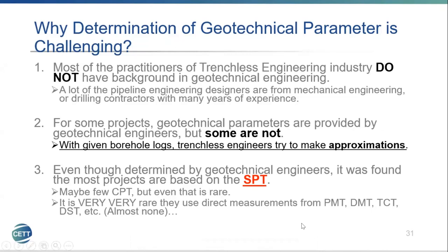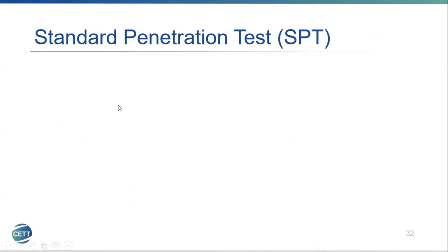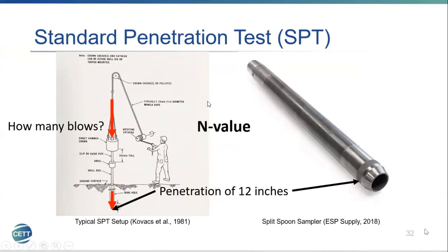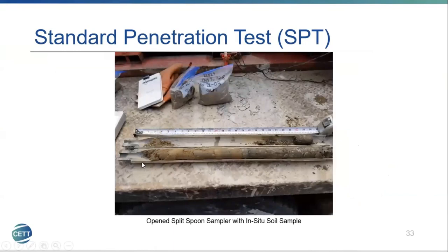The SPT, or standard penetration test, uses a split-spoon sampler attached to a drilling rod with a 140-pound hammer dropped from 30 inches above. The split-spoon sampler must penetrate 12 inches, and the number of hammer blows required is denoted as the N-value. This N-value is used as an estimator of many soil properties. A sample can also be collected and logged to retain additional information.